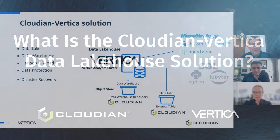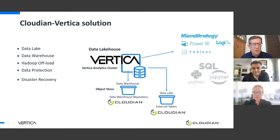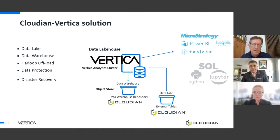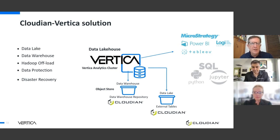The data lakehouse kind of looks like this. You basically set up a Vertica cluster — it can be one node or it can be 50 nodes. That cluster can act on Cloudian, the Cloudian object store, in two ways.